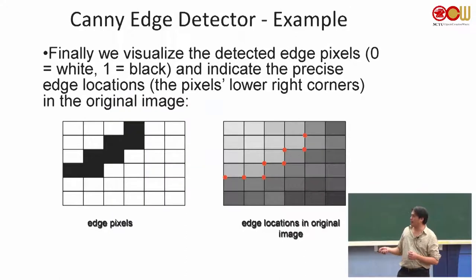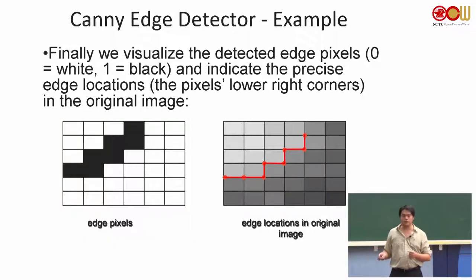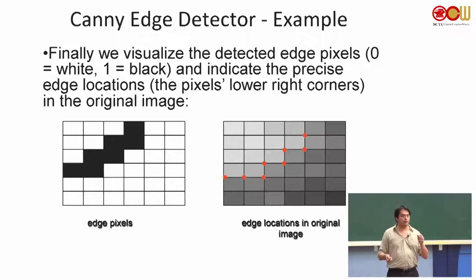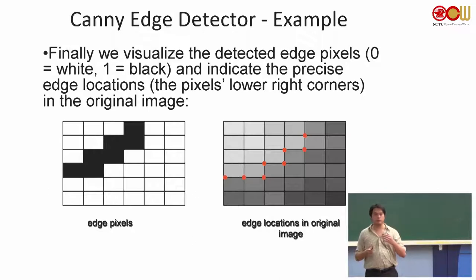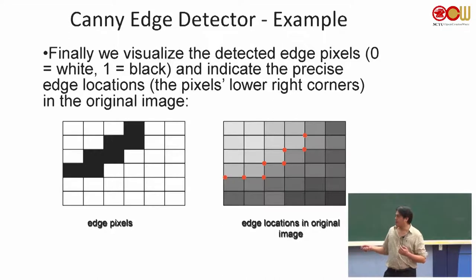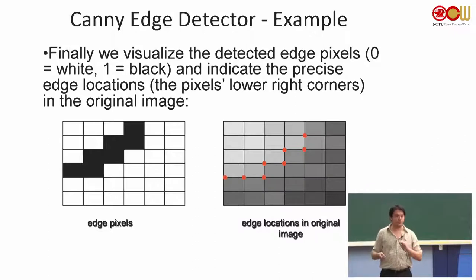This is our final output — the edge pixels and edge locations in the original image. One thing very important is that the edge pixels' thickness will always be 1. That's the fundamental difference. We want to do non-maximal suppression compared to just Sobel filters. The other good thing is that later we can fit those edge pixels into line segments, and we also need the orientation as well.